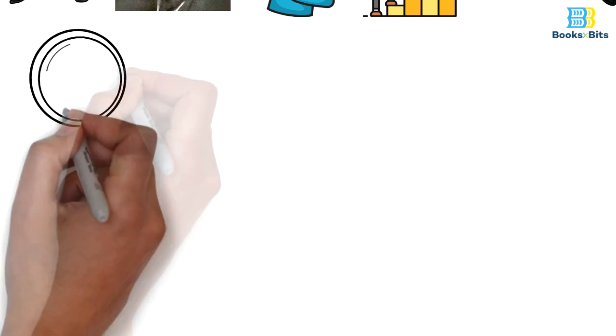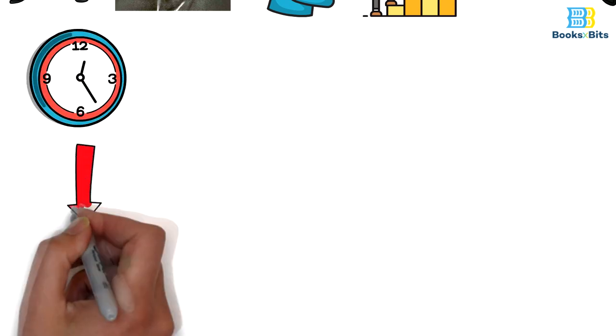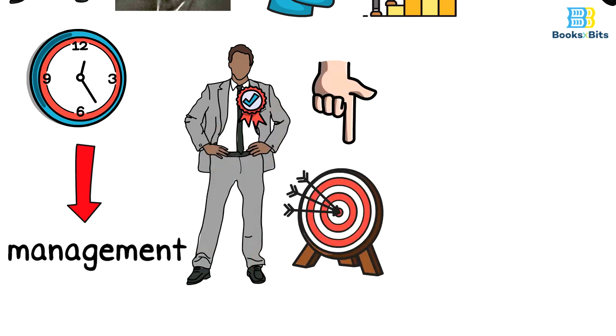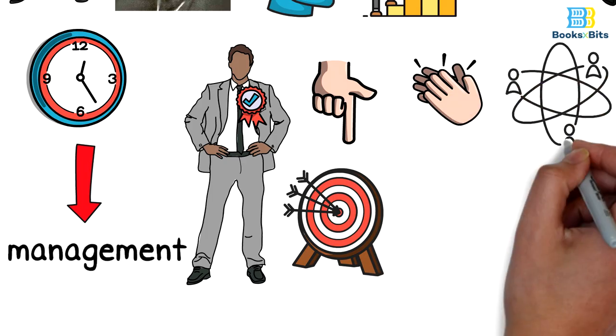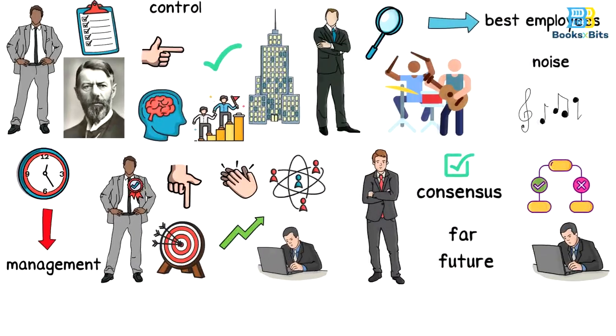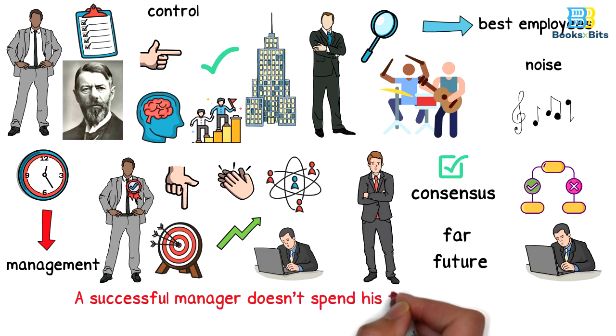Most managers spend their time on things that are not at the core of management. But a successful manager is the one who sets goals, analyzes activities and relationships, motivates, communicates, and develops his employees. A successful manager doesn't spend his time doing things that aren't at the core of management.